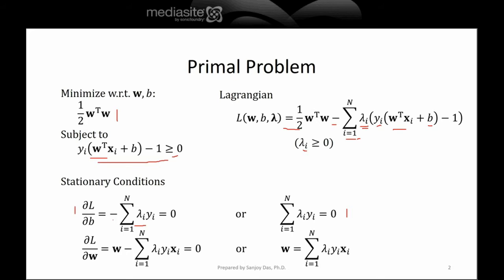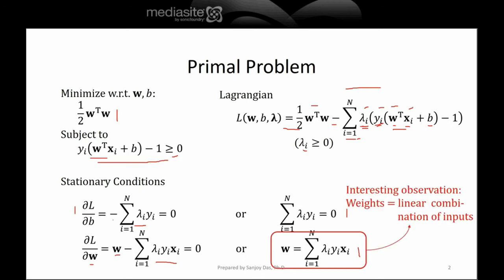Now let's take the derivative with respect to W. The first term half W transpose W gives simply W. For the second term, W transpose is being multiplied with Lambda_i Y_i X_i, so when we take the derivative we are left with Lambda_i Y_i X_i. We get W minus summation Lambda_i Y_i X_i equals 0, therefore W equals summation Lambda_i Y_i X_i. An interesting observation is that the weights W are expressed as a linear combination of the inputs, multiplied by Lagrange multipliers and Y_i's.